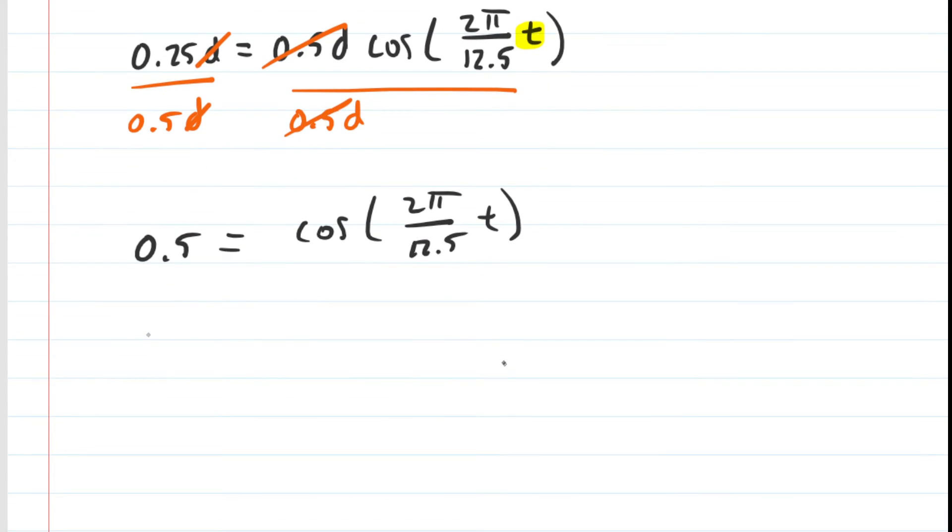Now, we want to get rid of the cosine on the right-hand side of the equation. So to do that, we would apply the inverse cosine to both sides of this equation. The inverse cos and the cos will cancel each other out. Now, turn your calculator onto radian mode and do the inverse cos of 0.5. And you should get approximately 1.047.